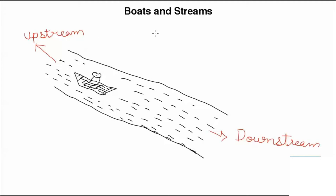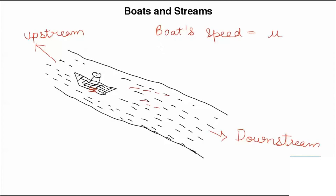The first one is the boat speed. Boat speed is the speed of the boat in still water and it is denoted as U. And there is a stream speed, which is the speed of water, denoted as V.